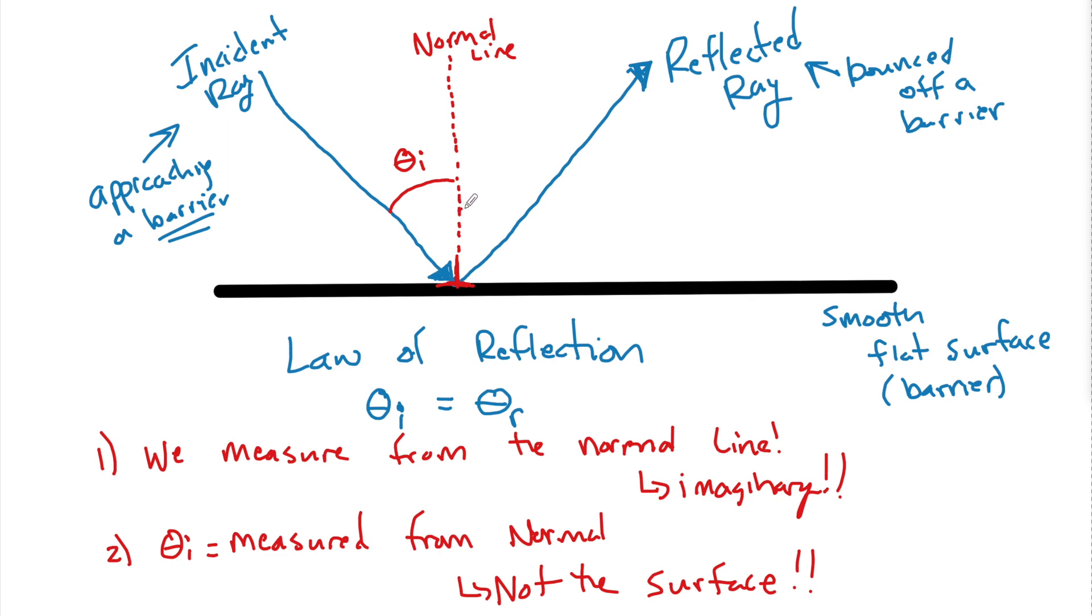Now this angle has to be equal to the reflected angle, which is also measured from the normal. If this was a plain old mirror, nice and flat, this is going to be true. It gets confusing because students want to measure from the surface. I keep saying this. It happens over and over again. You cannot measure any angles in light, whether it's reflected or refracted in the next lesson, from the surface. It's always from this imaginary line perpendicular to the surface that we call the normal.